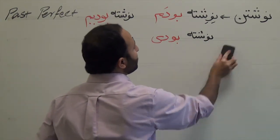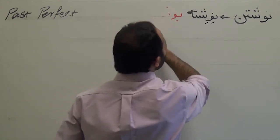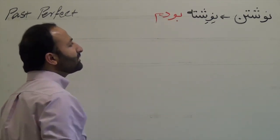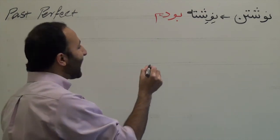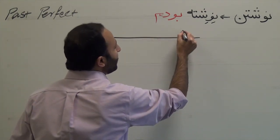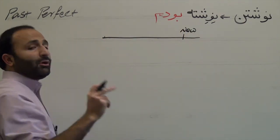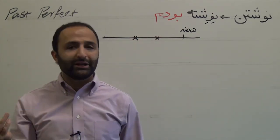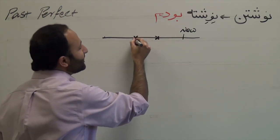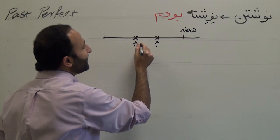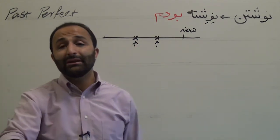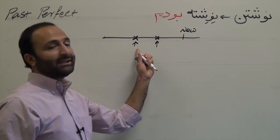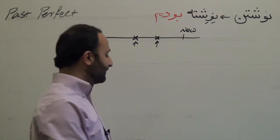Now let's talk about the usage of the past perfect. Past perfect is about an action — if we say this is the present time, it's about two actions that have happened in the past, but one preceded the other. The past perfect one is the action that happened further in the past.